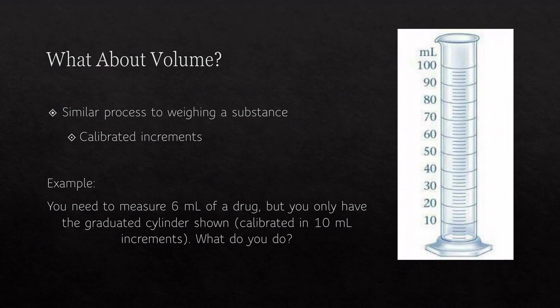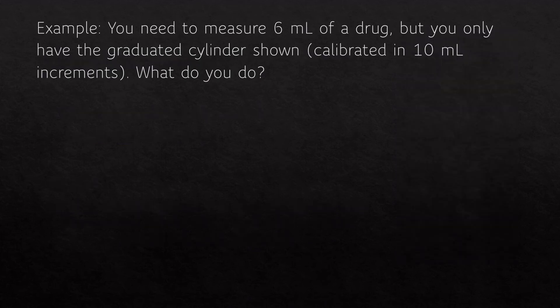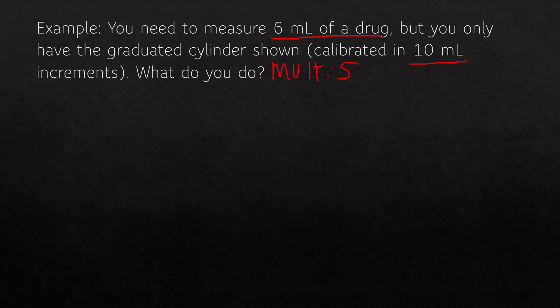What about volume? It's a similar process to weighing a substance. For example: you need to measure 6 milliliters of a drug but you only have a graduated cylinder calibrated in 10-milliliter increments. You need to make 6 milliliters into a number divisible by 10. Using a multiple of 5: 6 times 5 equals 30 milliliters, which is an amount that can be measured by the graduated cylinder.